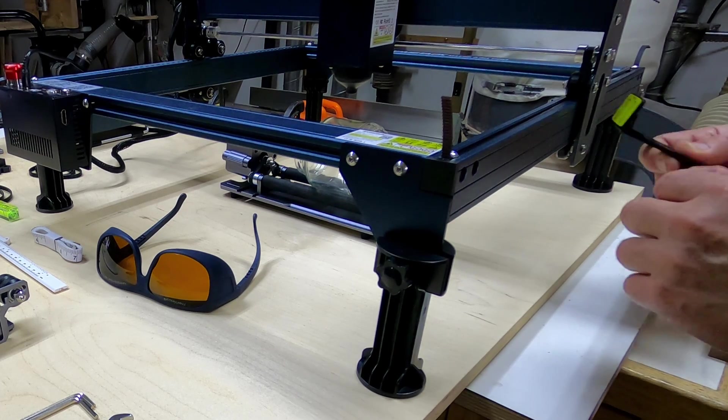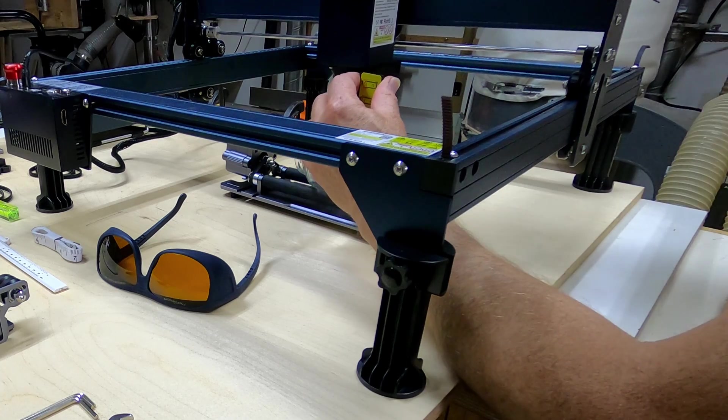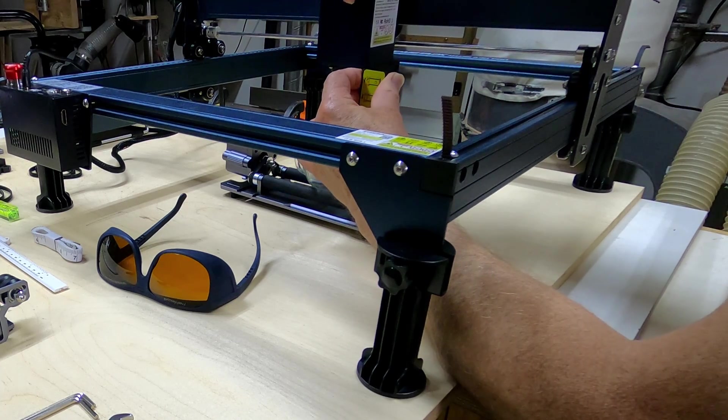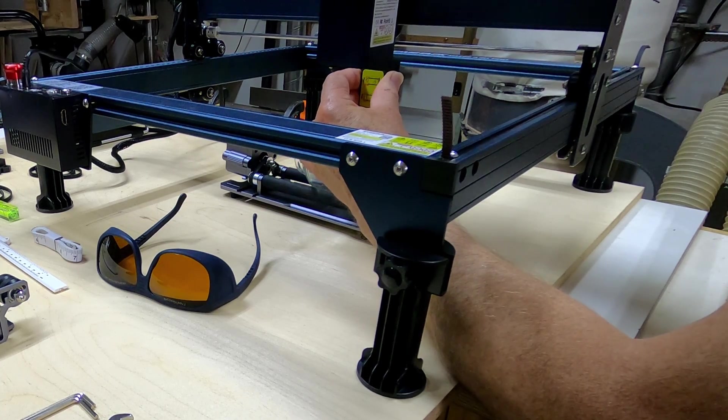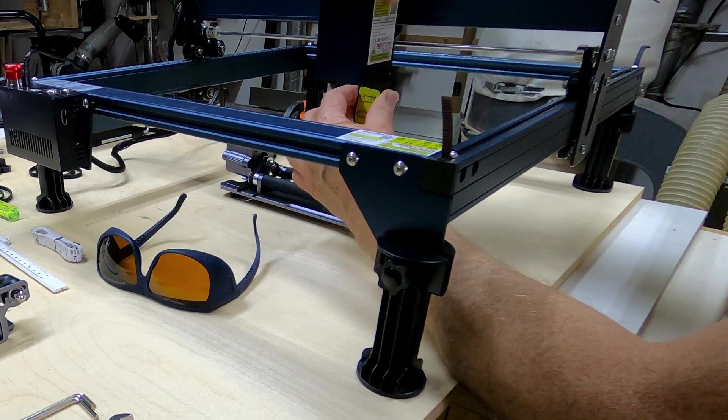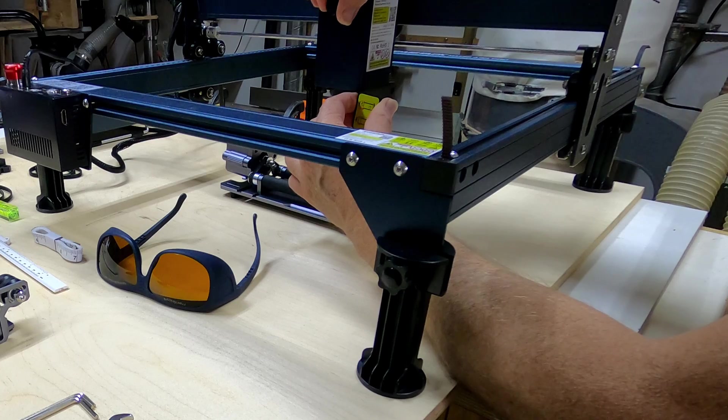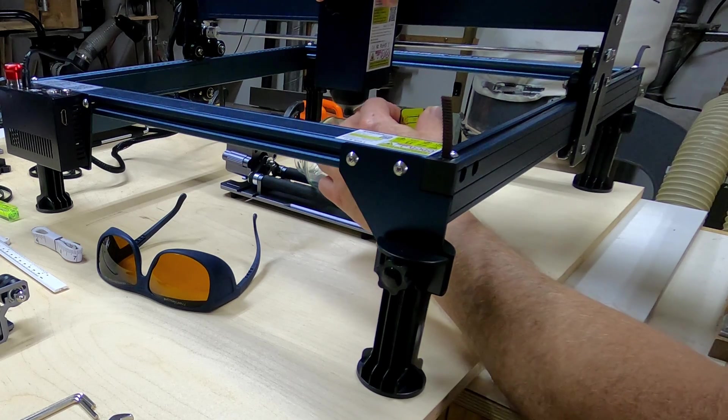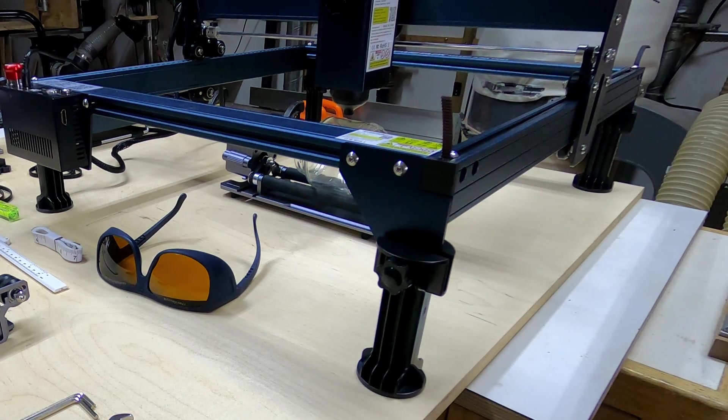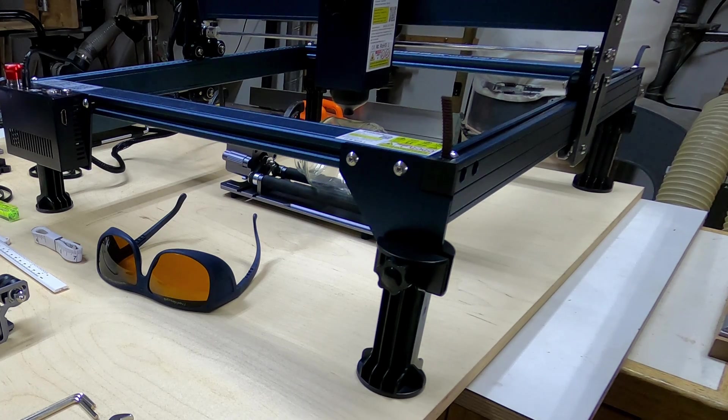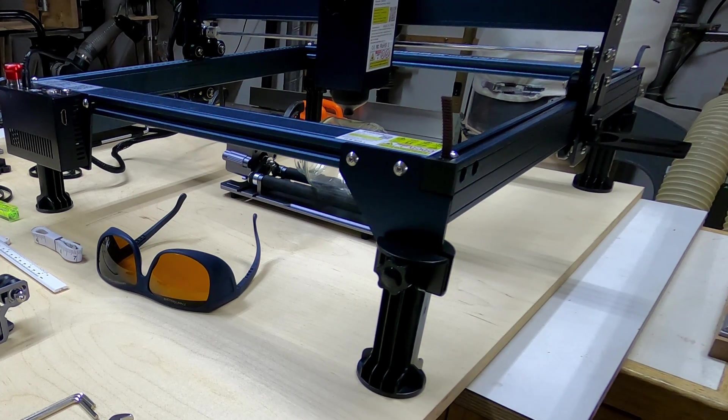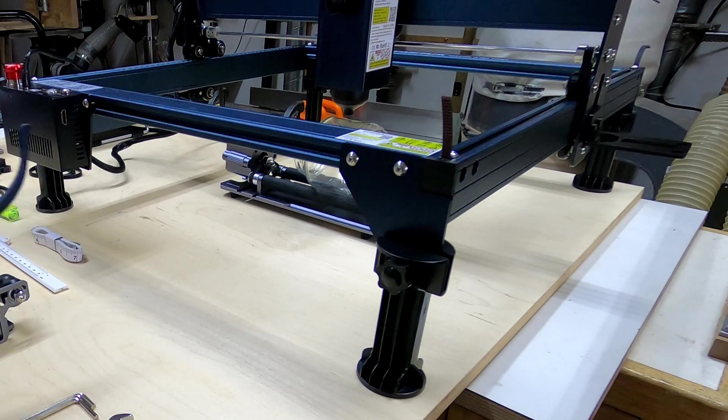Now with that shield removed, I can take this focusing bar, put it under here, lower this down by loosening this knob until it's on the jar, tighten this up and now it is focused to engrave on that jar.